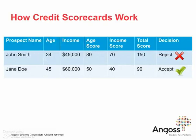Credit scorecards assign scores to individual data attributes based on data values and the associated average risk. Scores for each of the attributes are summed up to determine a final score. That final score is then used to establish a cutoff of good versus bad prospects or customers. We end up accepting customers or prospects with a lower risk score and rejecting those with a higher risk score.